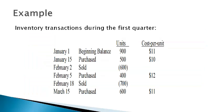Let's use an example of inventory transactions during the quarter to demonstrate the perpetual method. When the purchase and sale occurs matters when using the perpetual method. The first step is to list all transactions — purchases and sales — in chronological order.